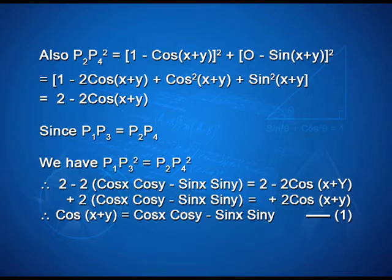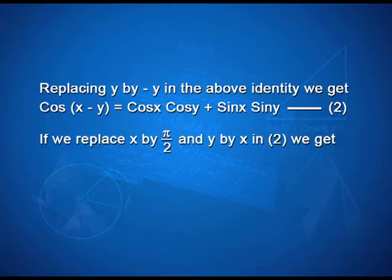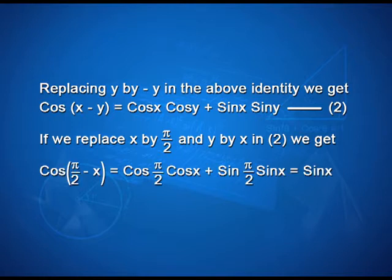Now, by replacing y by −y in the above identity, we get cos(x−y) = cos x·cos y + sin x·sin y. For the next identity, if we replace x by π/2 and y by x in the second equation, we get cos(π/2 − x) = cos(π/2)·cos x + sin(π/2)·sin x, which simplifies to sin x.